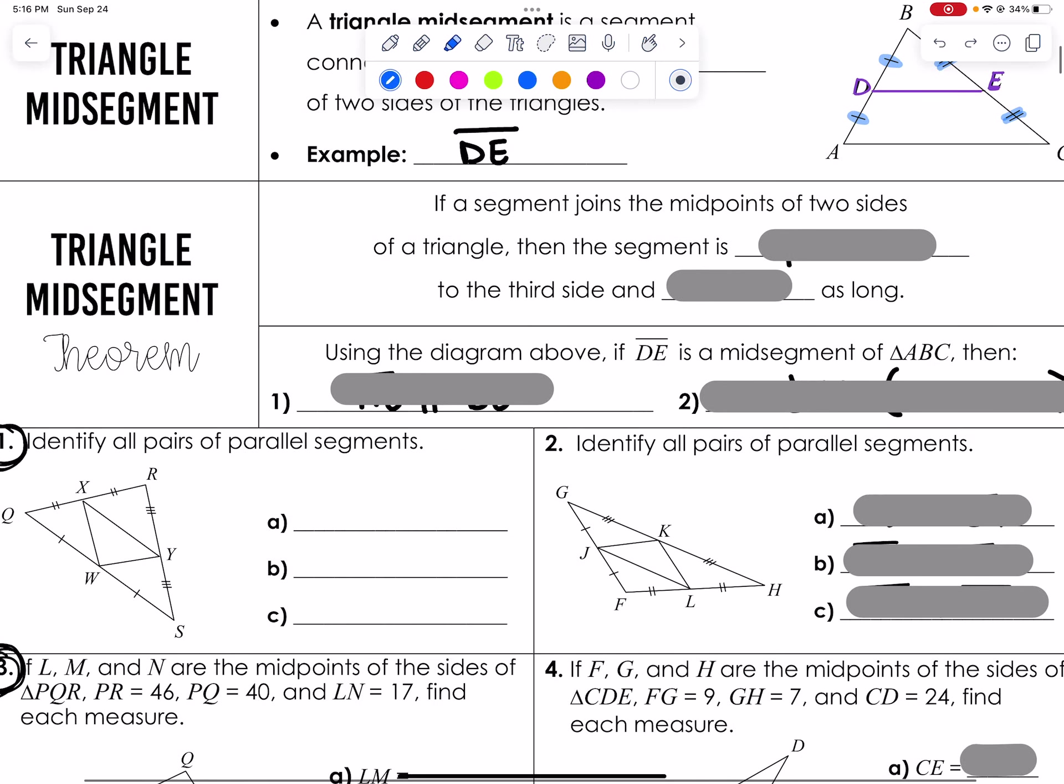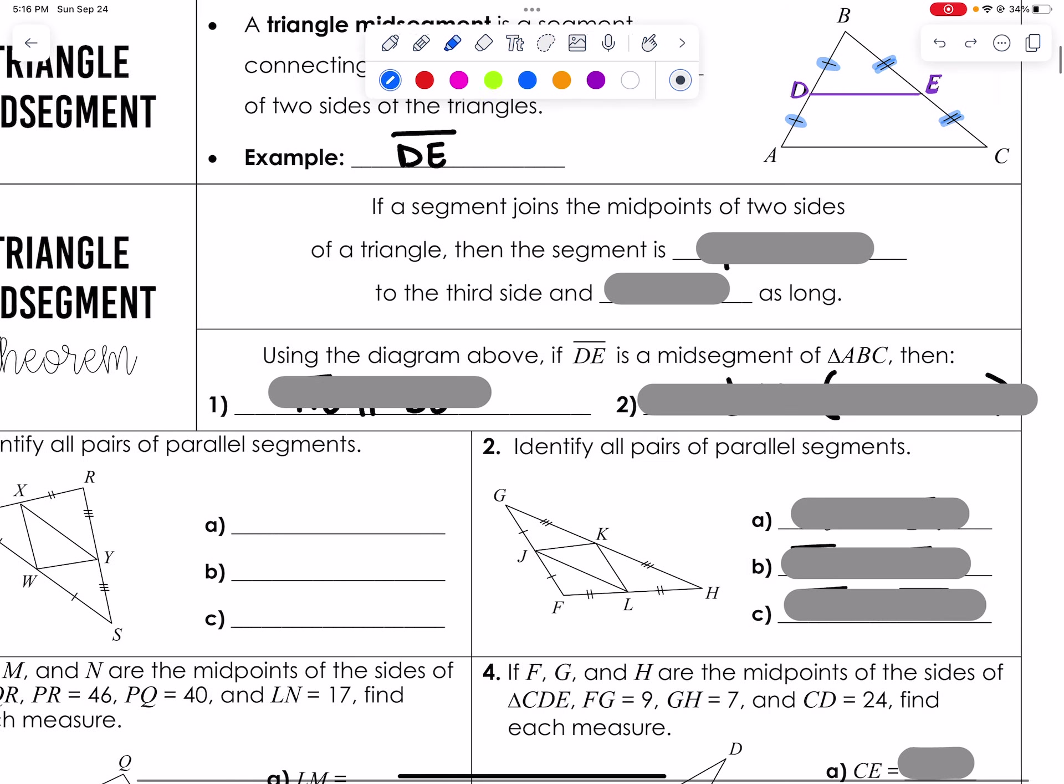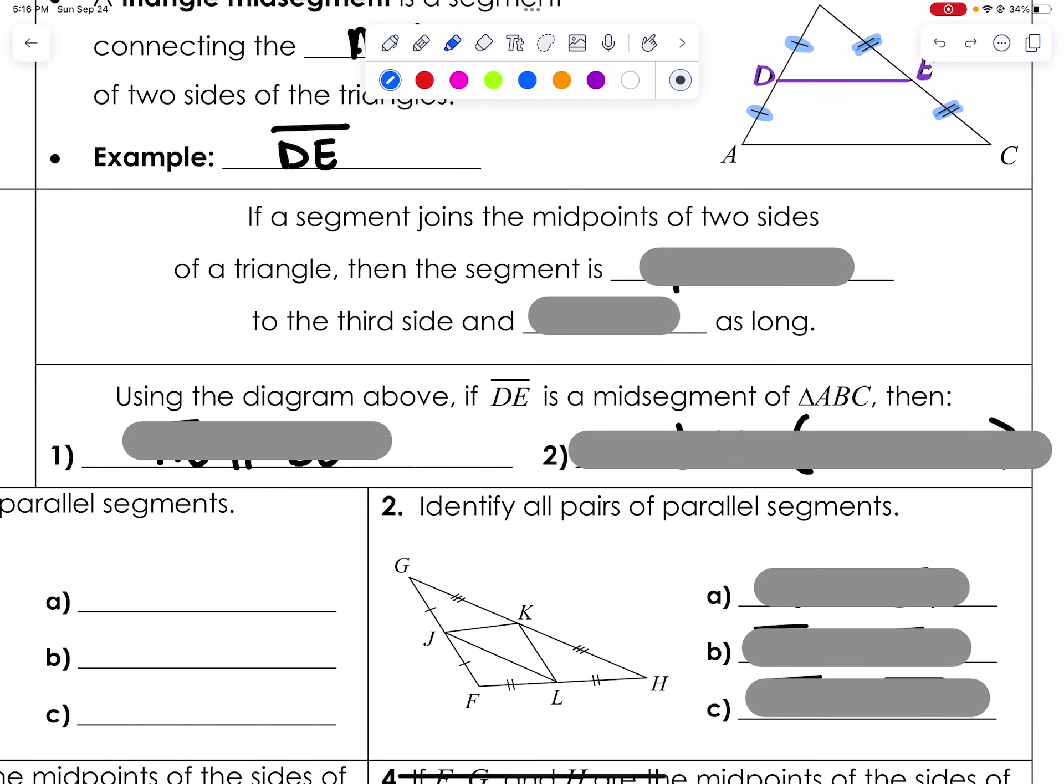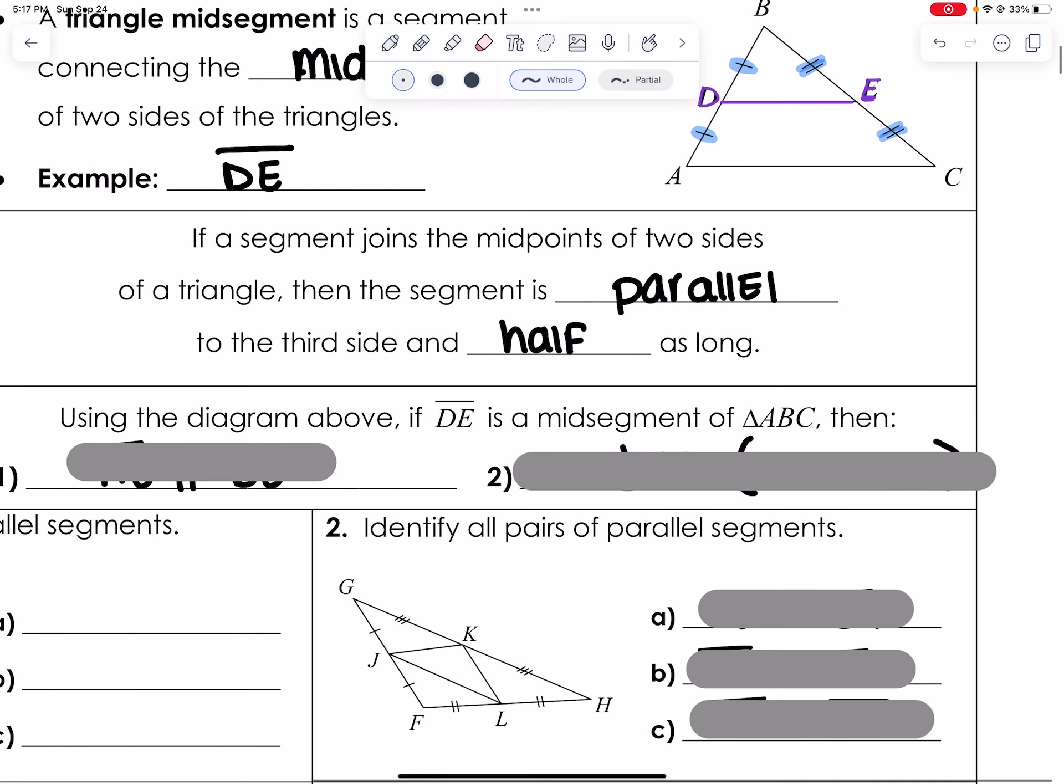Our triangle midsegment theorem states something very important. If a segment joins the midpoints of two sides of a triangle, then the segment is parallel to the third side and half as long. Finishing off the theorem here, using the diagram above, if segment DE is a midsegment of triangle ABC, then AC is parallel to DE.